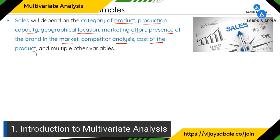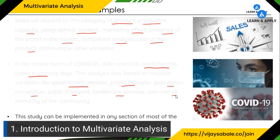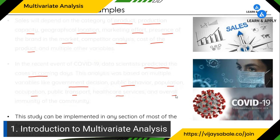Another detailed example is COVID-19. In recent years, data scientists predicted cases in coming days based on multiple factors including government decisions and policies, public behavior, population, occupation, public transport, healthcare services, and overall community immunity. It's a combination of many factors. In short, this study can be implemented in any field, and if you want to understand many complex problems, you need to use multivariate analysis tools.